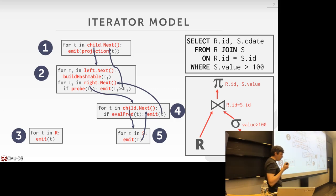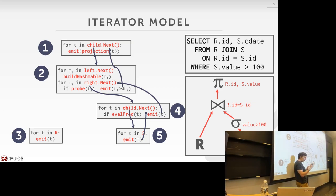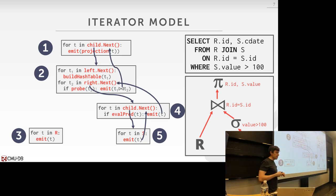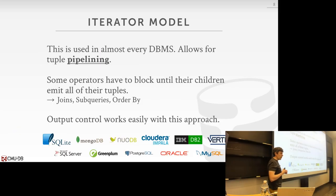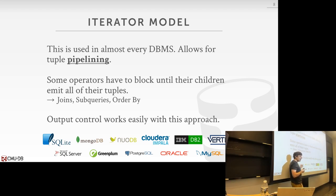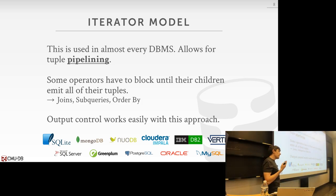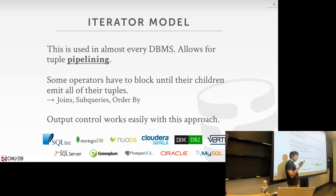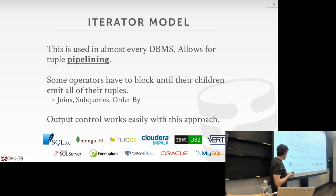Just like we talked about with joins — when we bring something into memory we want to do as much work as possible while it's in memory before going to the next thing, because disk I/Os are so expensive. The iterator model is used in pretty much every single database system you can think of, and the reason is that from a human standpoint it's easy to reason about the program flow and what's going to be in memory versus not.